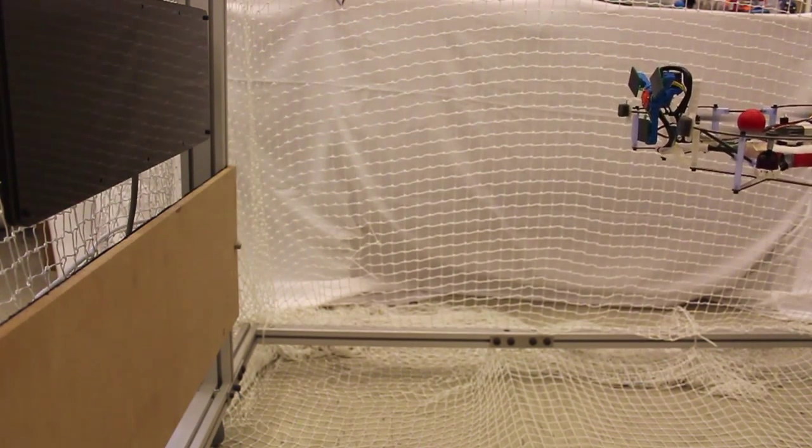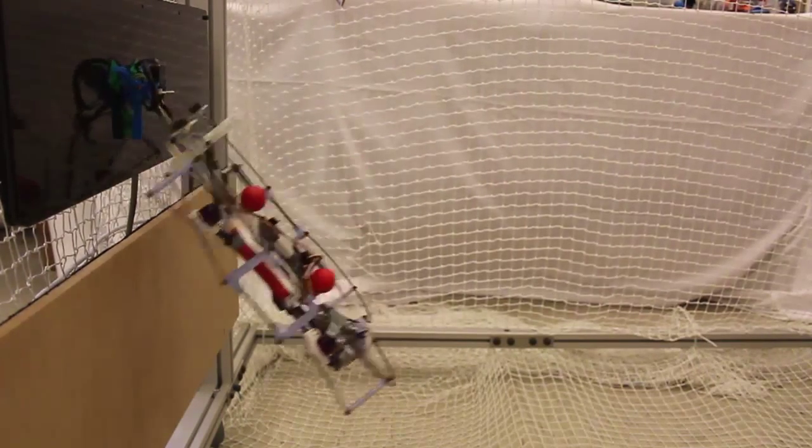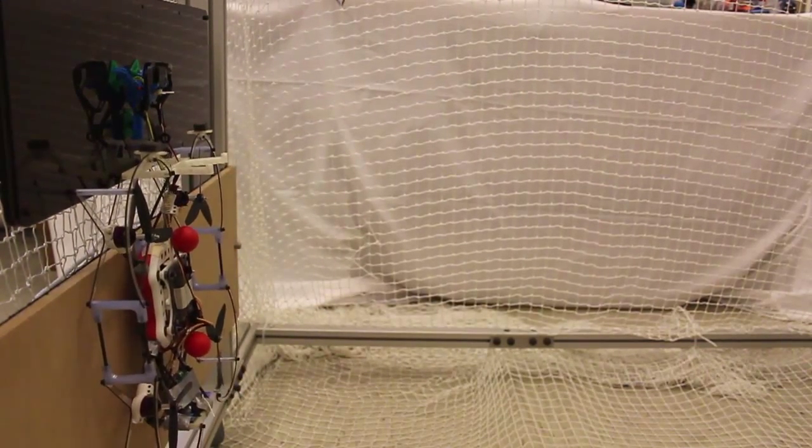This video demonstrates an autonomous perching and take-off method for a quadrotor micro air vehicle on smooth vertical walls using a novel dry adhesive gripper.